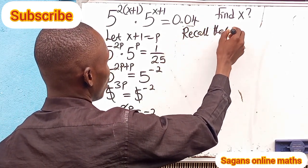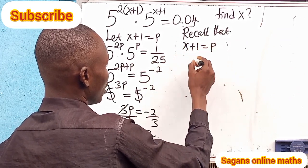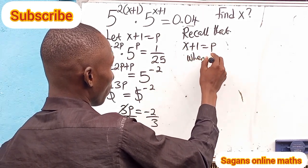Now recall that we set x+1 equals p. When p equals -2/3, we can substitute back.